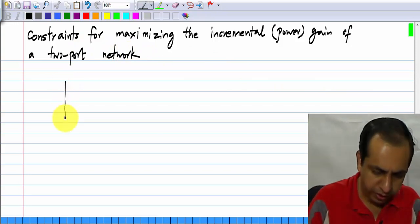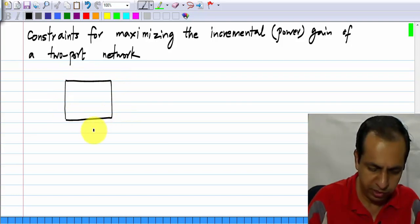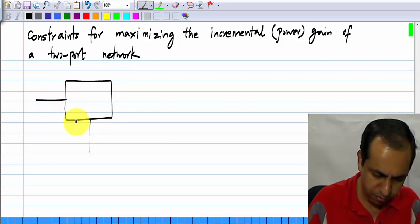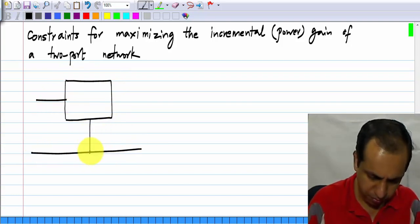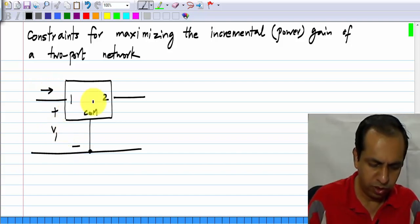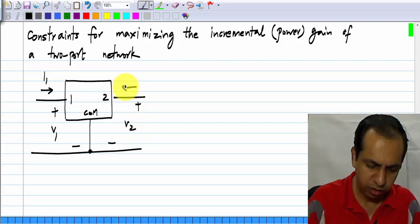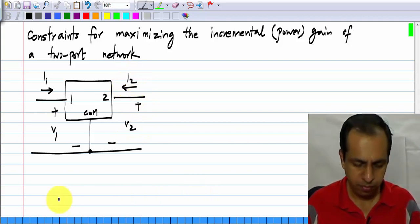Let us assume that we have a three terminal non-linear two port for simplicity. And we have a port one voltage and port one current, port two voltage and port two current.